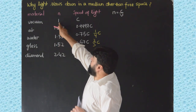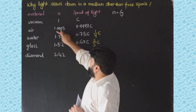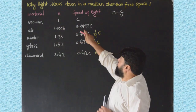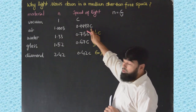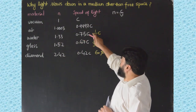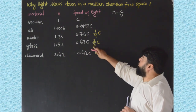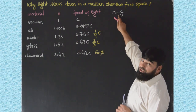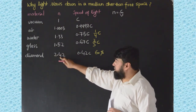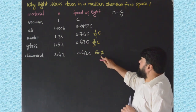Consider vacuum — its refractive index is 1, so the speed of light is exactly c. For air, the refractive index is slightly more than vacuum, so the speed is slightly reduced. For water, almost one-fourth of the speed of light has been reduced, while in glass it is two-thirds reduced. Diamond has the highest refractive index among these materials.